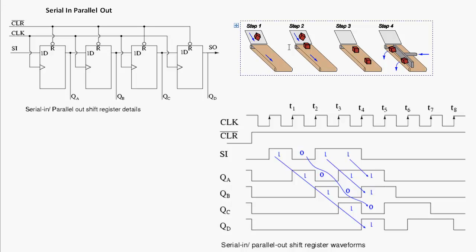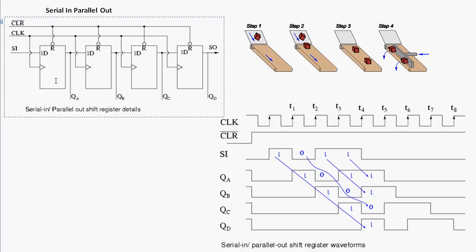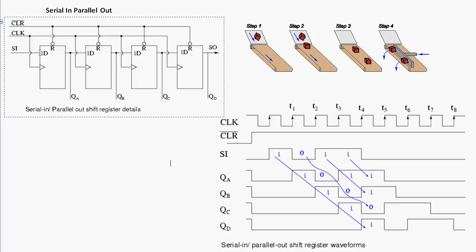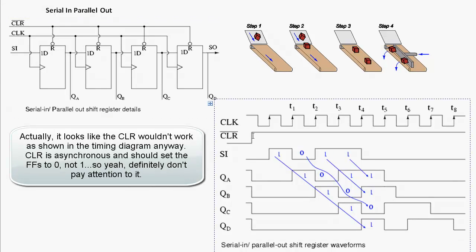Here is the serial-in, parallel-out shift register. Remember the conveyor belt analogy: bits come in one at a time, and bits get shifted out all at the same time. In this case we have a four-bit serial-in, parallel-out shift register, along with its timing diagram. The SI line is our serial input to the flip-flops. The clear signal is always high — it's an active-low signal used to start with everything cleared.